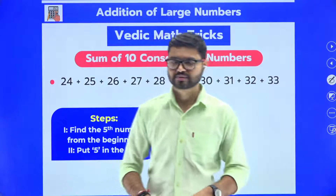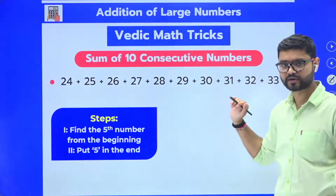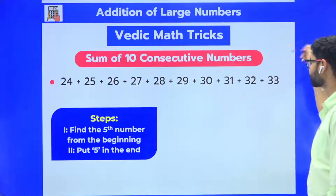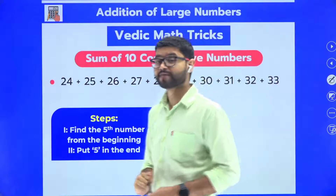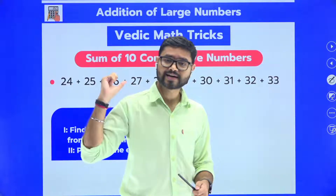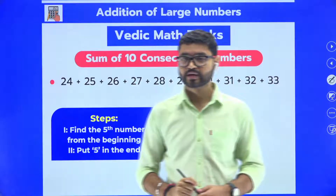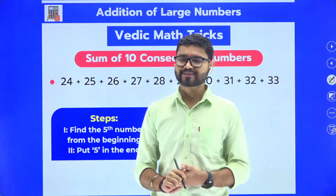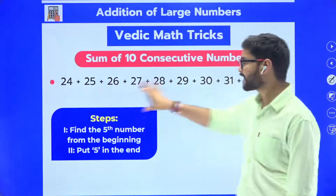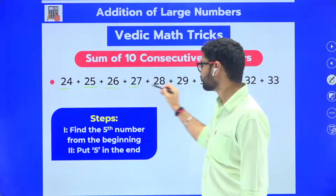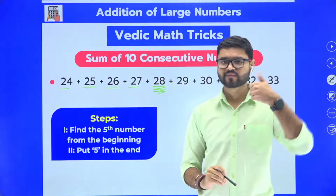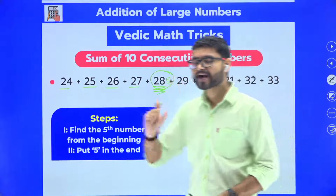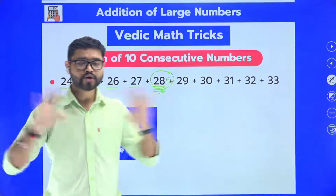Let me do one more question. We have 10 consecutive numbers: 24, 25, 26, 27, 28, 29, 30, 31, 32, 33 — no break, these are consecutive numbers. With the traditional method it would take some time. But all I have to do is find the fifth number: first, second, third, fourth, fifth — that's 28. Step two: put 5 at the end. Final answer: 285. Hardly two seconds!